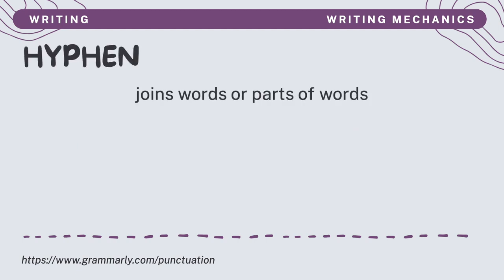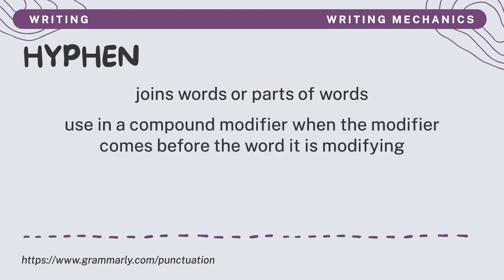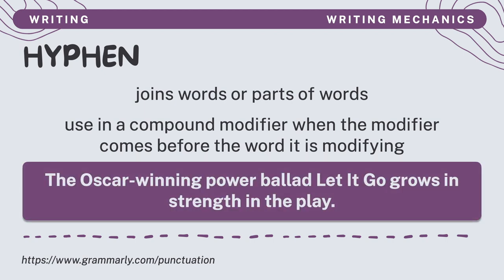A hyphen is a punctuation mark that's used to join words or parts of words. It's non-interchangeable with other types of dashes. You use a hyphen in a compound modifier when the modifier comes before the word it's modifying. If you're not sure whether a compound word has a hyphen or not, you may check your preferred dictionary. In this sentence: 'The Oscar-winning power ballad, Let It Go, grows in strength in the play.' Hyphen is used in 'Oscar-winning' because it is a compound modifier referring to the power ballad, Let It Go.